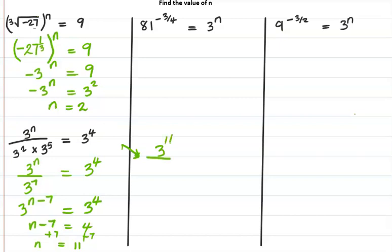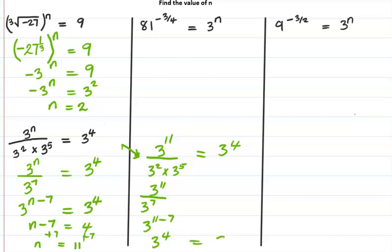Let's check: 3 to the 11 divided by 3 squared multiplied by 3 to the fifth. In the denominator, adding powers gives 3 to the 7th. Dividing same base: 3 to the 11 minus 7 = 3 to the 4th — exactly what we want. Both sides are equal, confirming n equals 11.